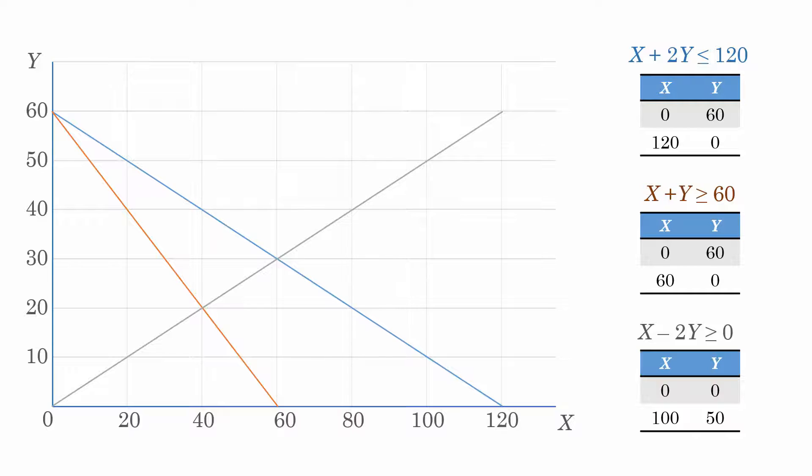Now the first constraint is a less than constraint, satisfied below the line in the direction of the origin here. The second is a greater than constraint, satisfied above the line away from the origin.